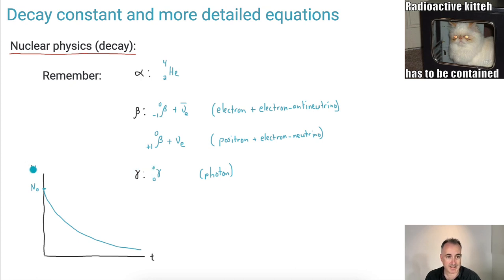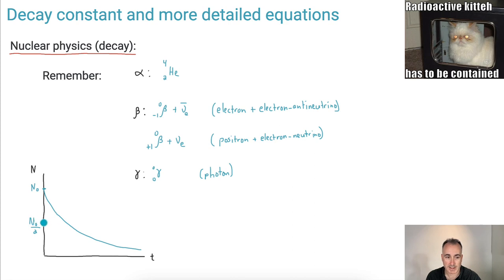Let's remember that decay is exponential. This is the number of atoms — it could be the mass or something like that — initially. If you start off with some initial amount N₀, there exists a certain time where you get half of that: N₀ over two. That time corresponding to going down by half is called t one-half — that's your half-life, the time it takes to go to half.